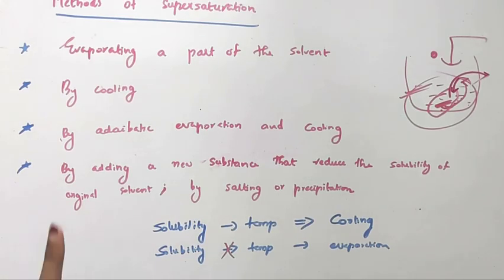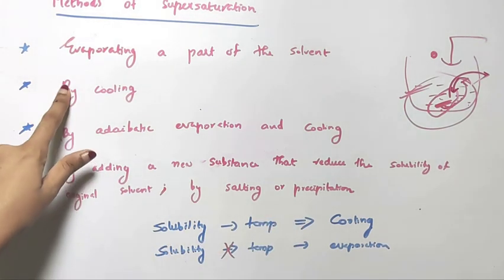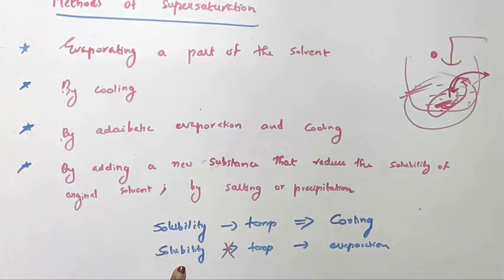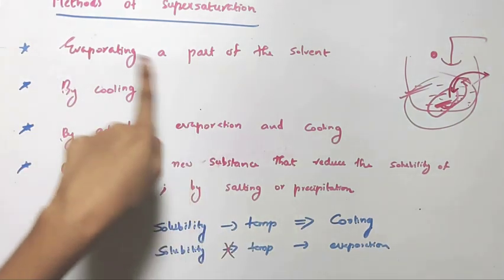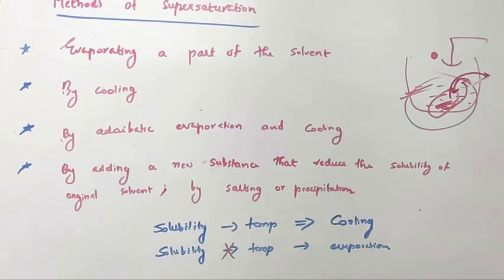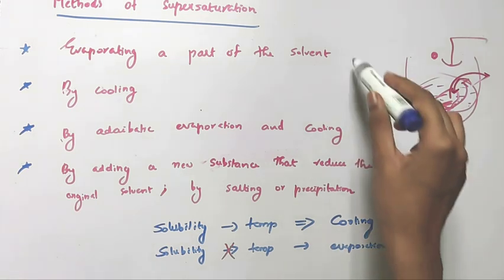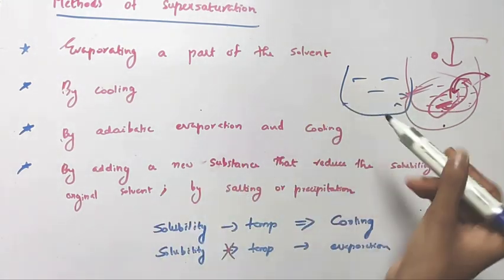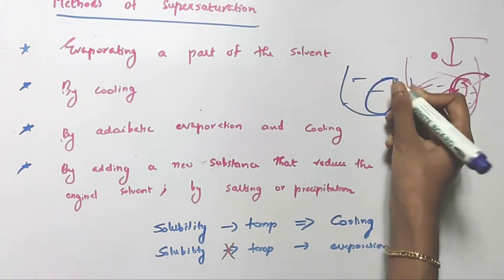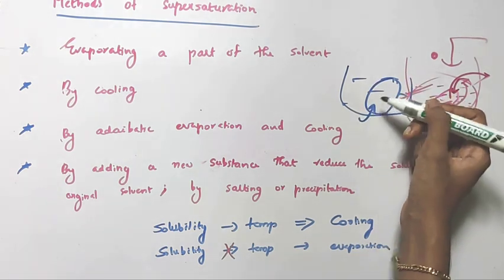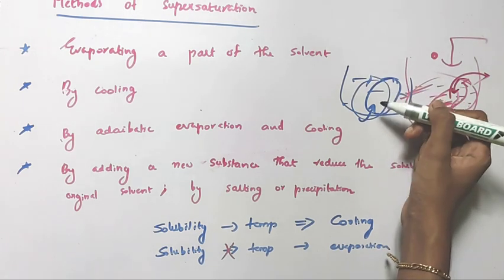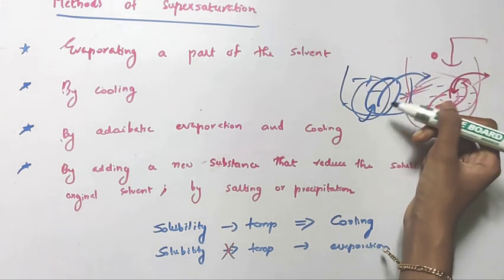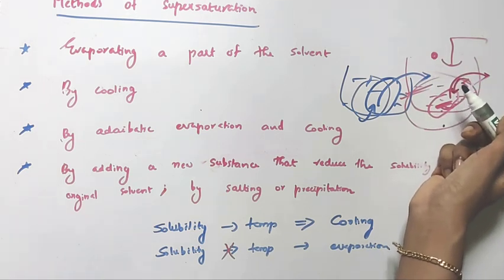An important point to note: if the solubility of our solution depends greatly on temperature, then the cooling method will be more appropriate. But if solubility does not depend much on temperature, then the evaporation method is more suitable. Solubility is the main factor in crystallization. When we reduce the solubility of the solvent, it will not be able to dissolve as much solute, and it will try to remove the solute by precipitating it out as crystals — and that is how crystallization takes place.